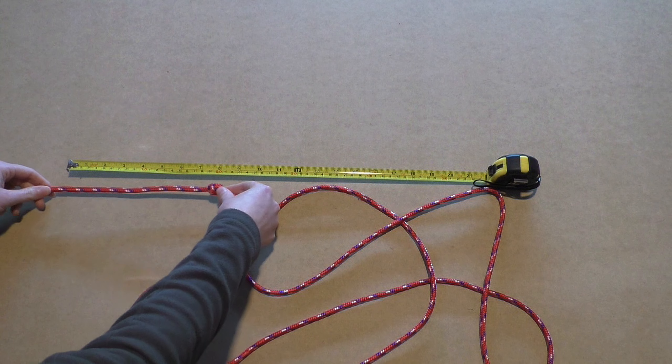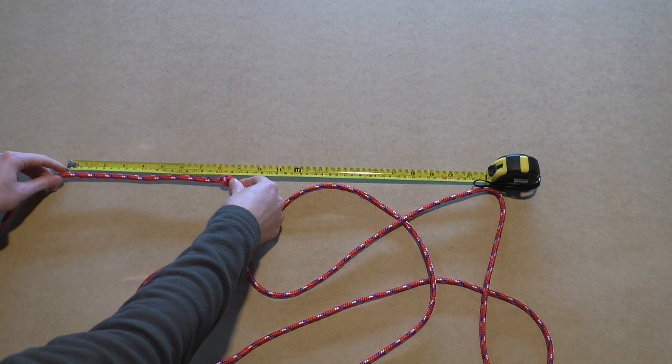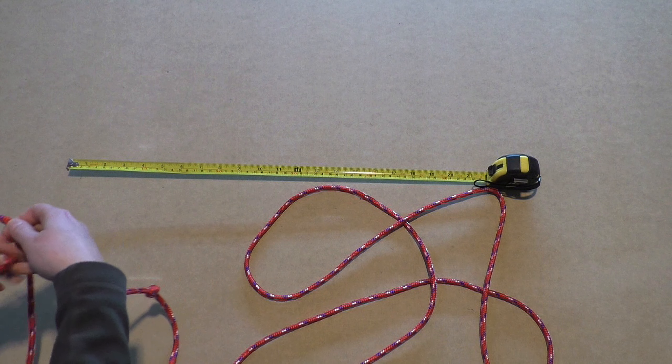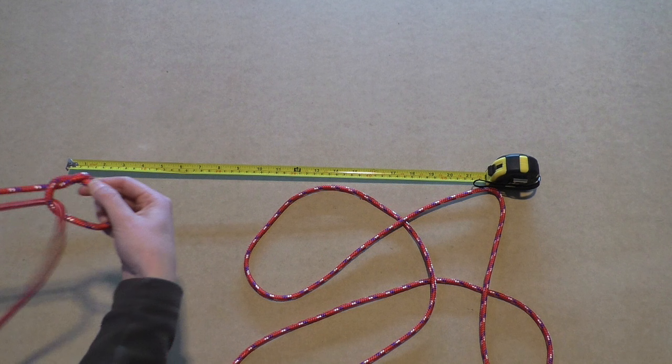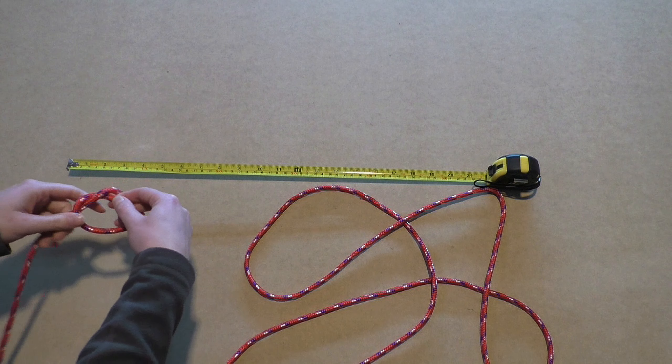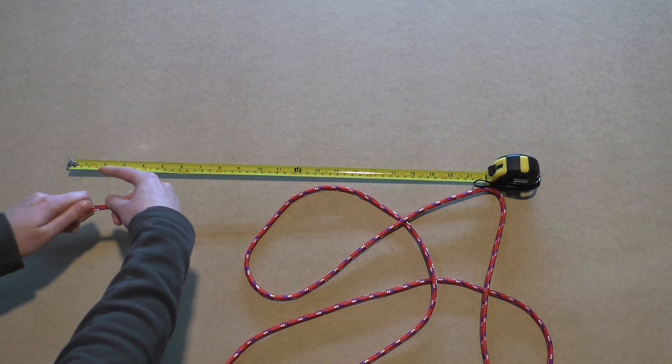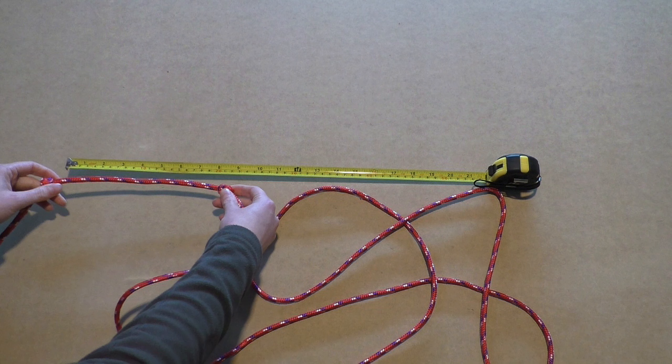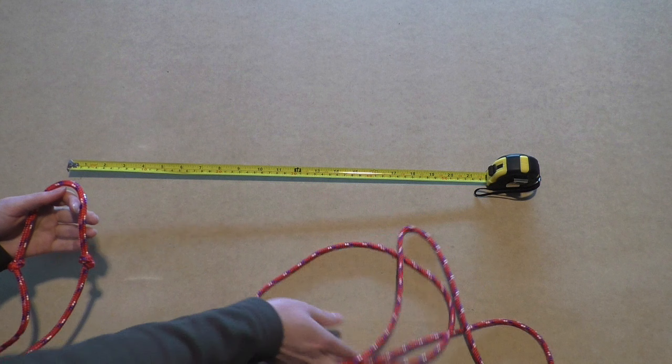After making this first knot, move 10cm to the other side of the middle, which is technically just 20cm from the knot you just made. Again, make an overhand knot. Now you have two knots which are 20cm apart from each other. These will be the knots which will be on the noseband.